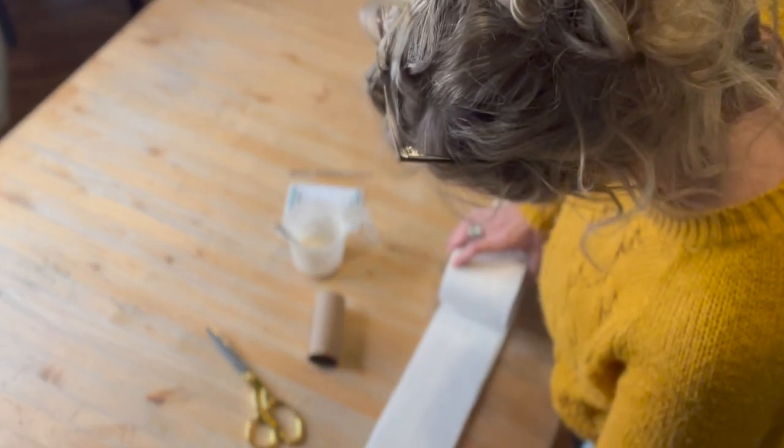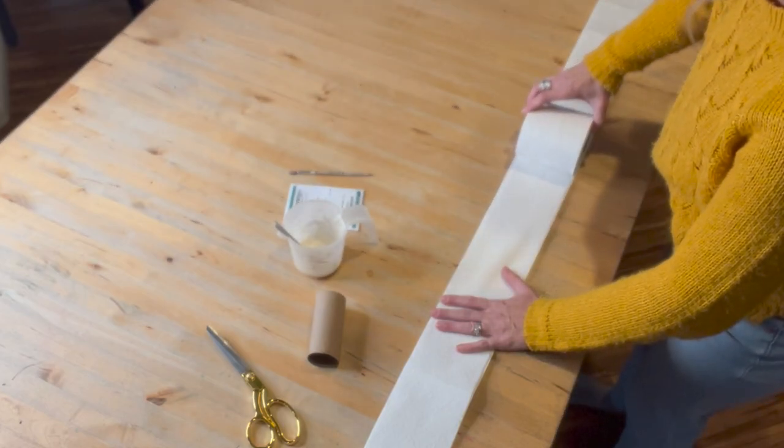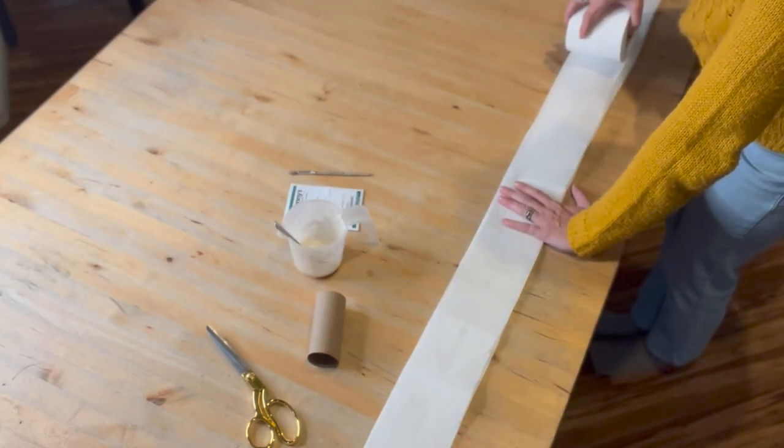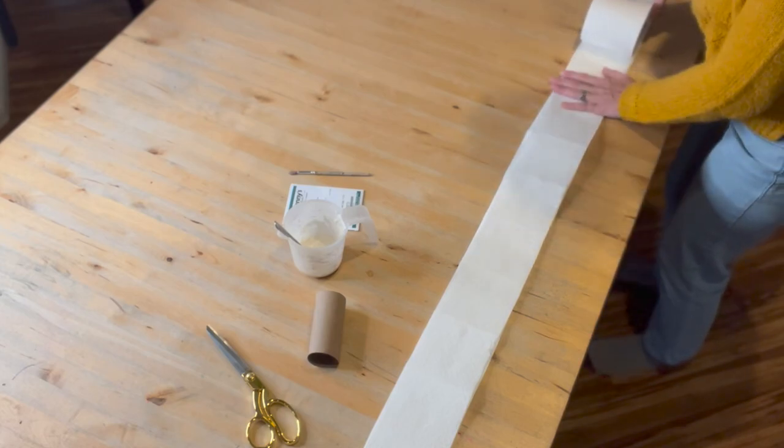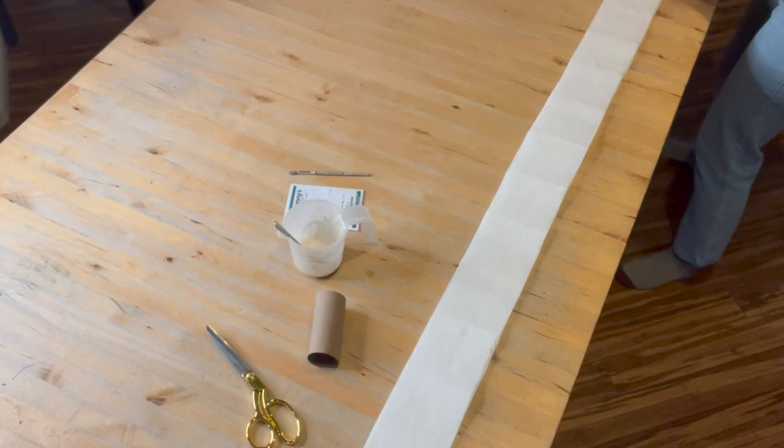This seed tape would also be really great for spinaches or onions or radishes, anything that's small and requires thinning. Super handy to do this ahead of time, especially when you've got yourself a few rainy days.